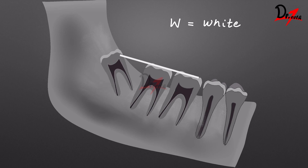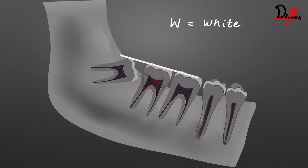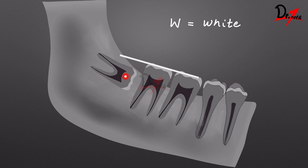If we have a distoangular impaction, the occlusal surface is meeting this line in front of the third molar. If we have a vertical impaction, this line will be parallel to the occlusal surface of the impacted tooth. If you have a horizontal impaction, this will be at a 90 degree angle. The white line indicates the depth of the tooth inside the mandible and also tells us the relationship of the occlusal surface of this tooth with the erupted molars.